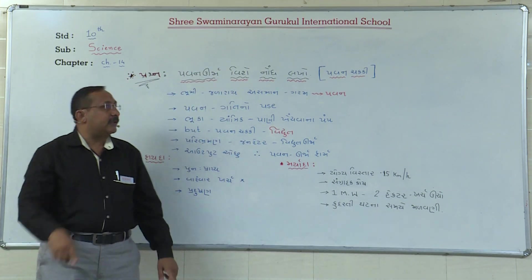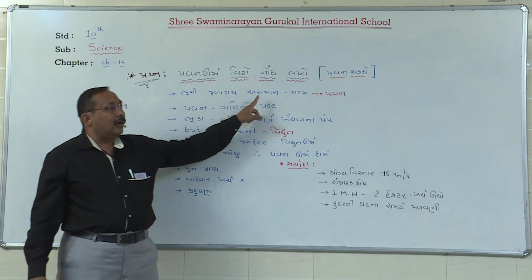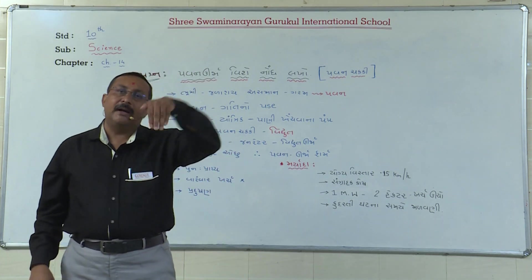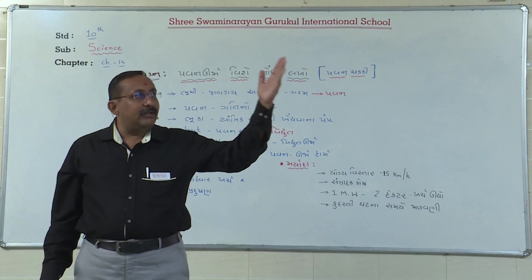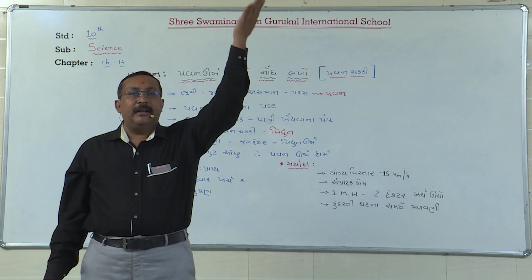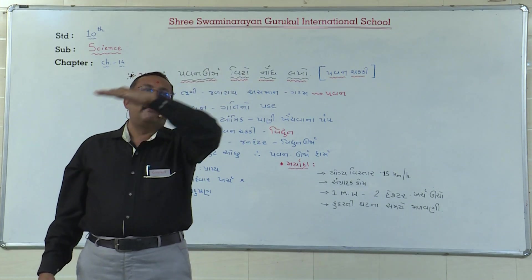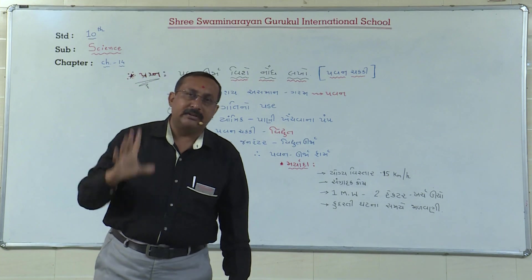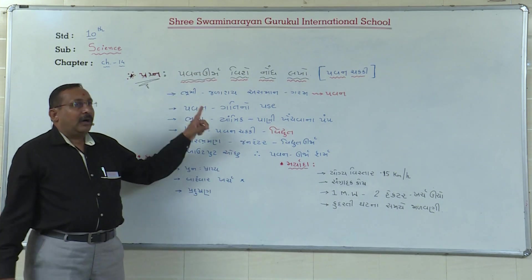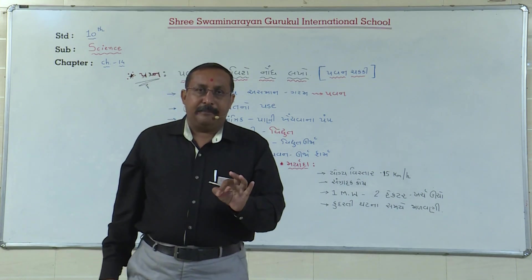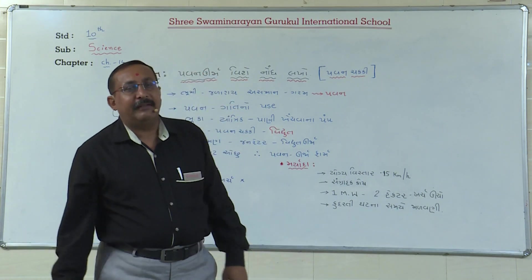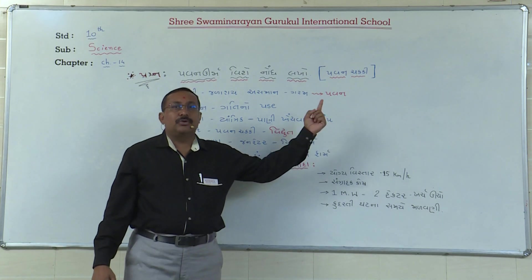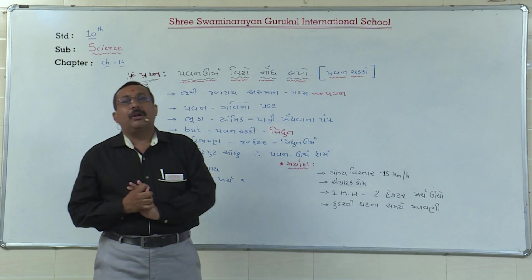ત્યારે જમીની હવા દરિયા તરફ જાય છે - આ એક પ્રકારના ચક્ર છે, જેને આપણે પવન કહીએ છીએ. આ પવન ચક્કી છે, જે પવન ઉર્જાનો ઉપયોગ કરે છે.